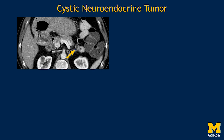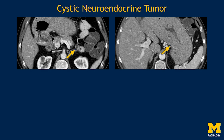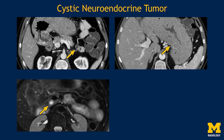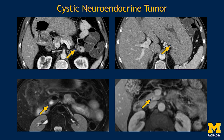Looking at this cystic lesion in the tail of the pancreas, we see a 1.5 cm lesion that appears to be a cystic pancreatic lesion. However, notice significant thickening of the gastric folds — this was a proven case of gastrinoma involving the tail of the pancreas. In another example, on this axial T2-weighted image we see a cystic lesion in the head of the pancreas; looking at the contrast-enhanced MR examination, we see a peripheral rim of enhancement suggesting this is a cystic neuroendocrine tumor.